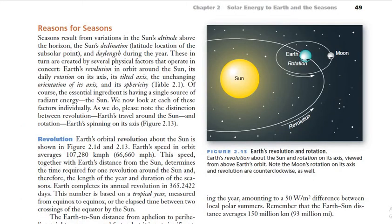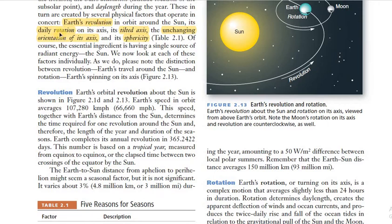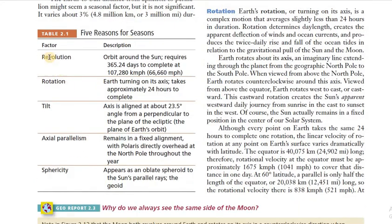We have discussed the terminology of seasonality, which includes changing seasons, changing sun angle, and changing day length. Now we will discuss why these things happen. There are five reasons for the seasons: the revolution of the Earth, the rotation of the Earth, the tilt of the axis at 23.5 degrees, the unchanging orientation of the axis, and sphericity.